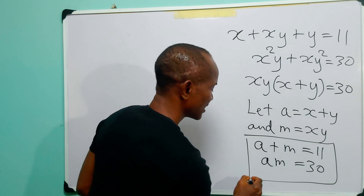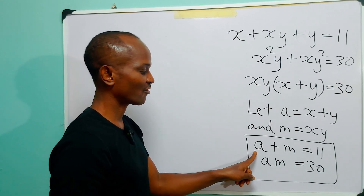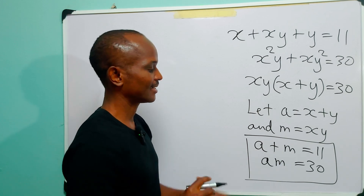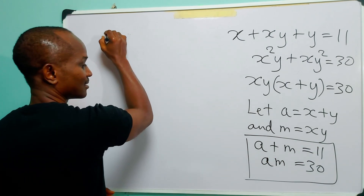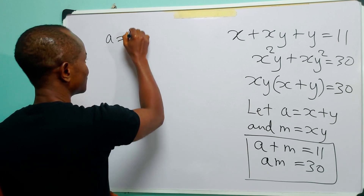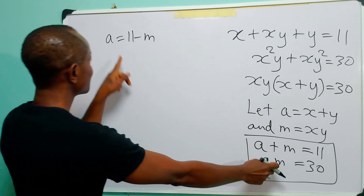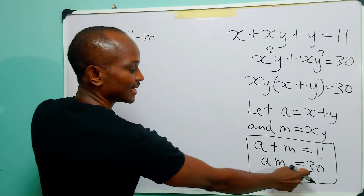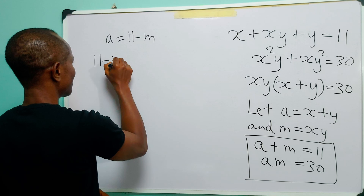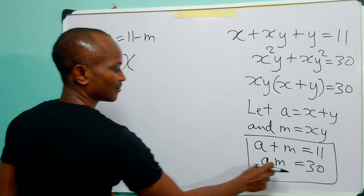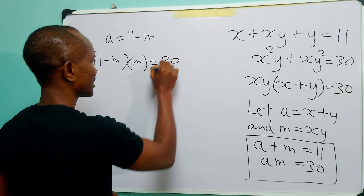Now you can see that we have a much simpler system of equations that we can solve for values of a and m. From the first equation we have that a is equal to 11 minus m, and we can substitute this for a in the second equation. So where we have a, we replace it with 11 minus m, and of course we have m is equal to 30.